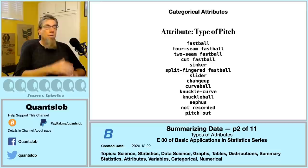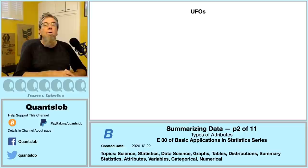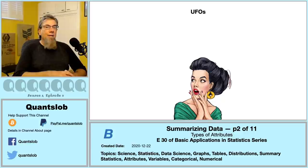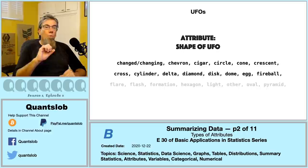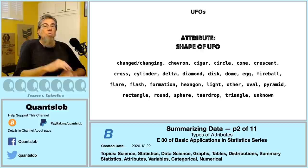Our data could also be UFO sightings data, where each record is a sighting. We have an attribute for the shape of the UFO, and the domain of values is categorical — these values are qualitative labels, or more simply, just words.